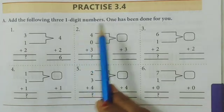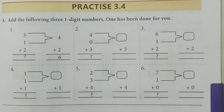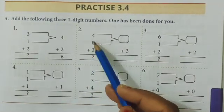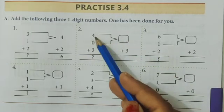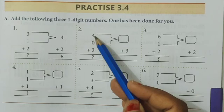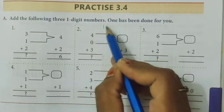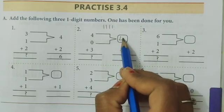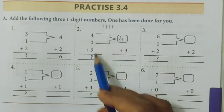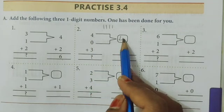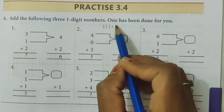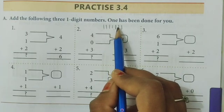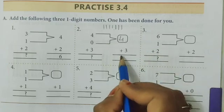Second example: 4+0+3. First solve 4+0. Since adding zero changes nothing, we get 4. Then 4+3: in the number 4, add 3 more — 1, 2, 3, 4, 5, 6, 7. Therefore 4+3 equals 7.